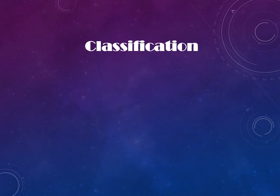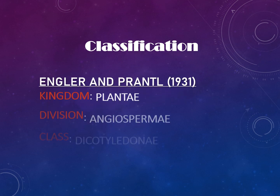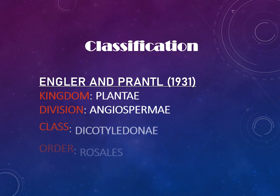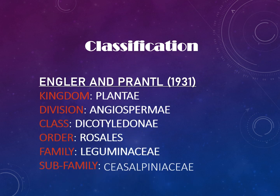Now let's discuss the classification system. The family Caesalpinaceae is placed in kingdom Plantae, division Angiospermae, class Dicotyledonae, order Rosales, family Leguminaceae, and sub-family Caesalpinaceae.